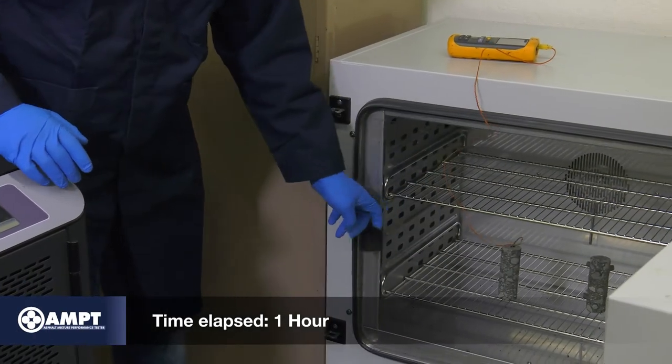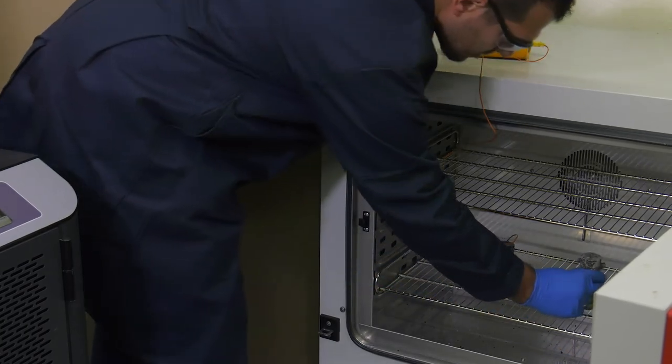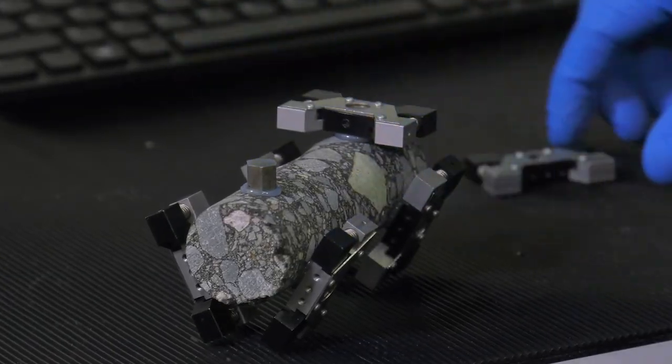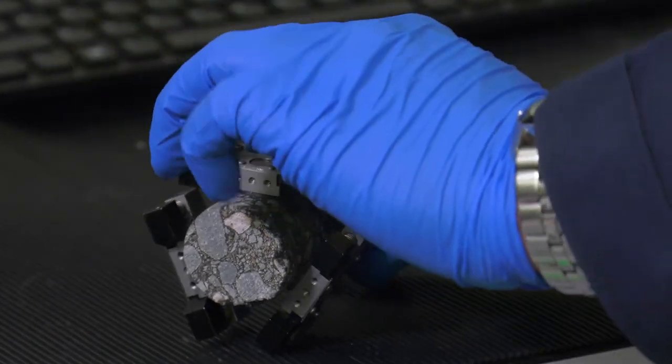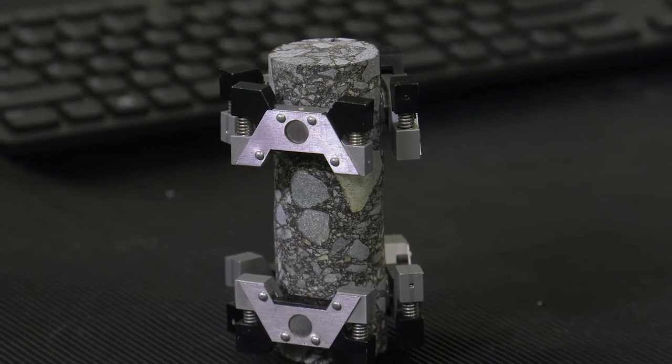Once the dummy specimen has reached the designated testing temperature, remove the test specimen from the external environmental chamber and attach the LVDT clamps. If multiple sets of LVDT clamps are available, they can be installed before placing the specimen in the external environmental chamber.